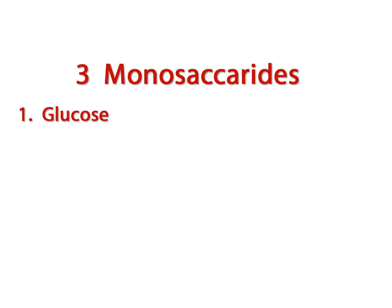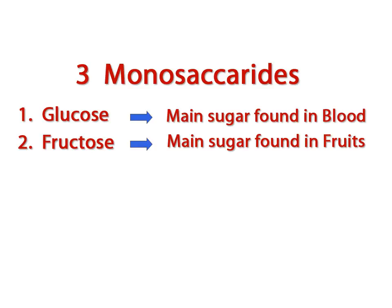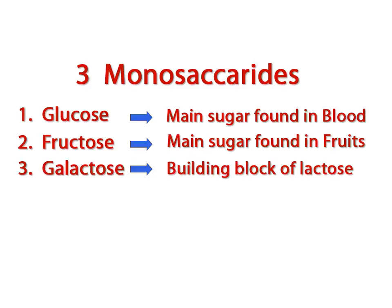There are three monosaccharides that you need to know. The first is glucose. We're going to talk a lot about glucose in this course, because glucose is the main form of sugar found in our bloodstream. Fructose is the sweetest monosaccharide — based on the name, where do you think you might find it? It is the main sugar found in fruits, and it's very sweet. The third monosaccharide that you need to know is called galactose.